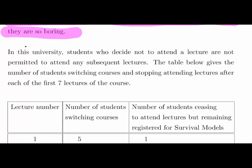This requires a little bit of a suspension of disbelief here, so just go along with this scenario. In this university, students who decide not to attend a lecture are not permitted to attend any subsequent lectures. So we're following with the notion of it being a survival analysis, that you can't suddenly turn up at a subsequent lecture. The table below gives the number of students switching courses and stop attending lectures after each of the first 7 lectures of the course.